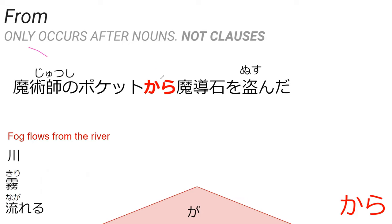So kata is the next thing we're learning, which basically means 'from.' Something I just want to let you know: kata only occurs after nouns.